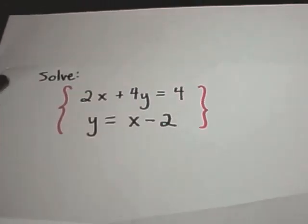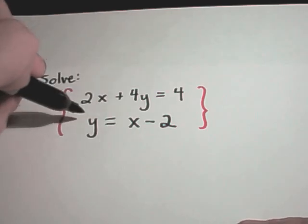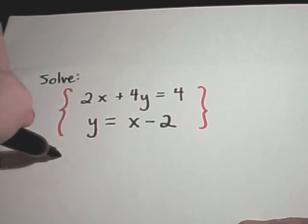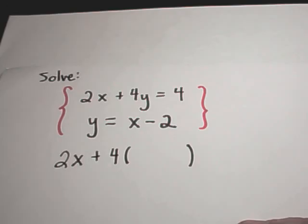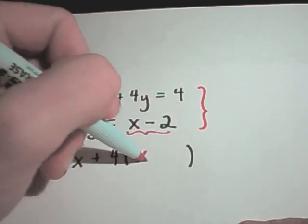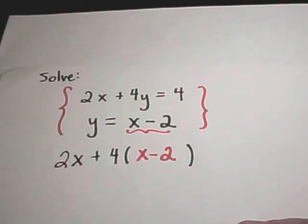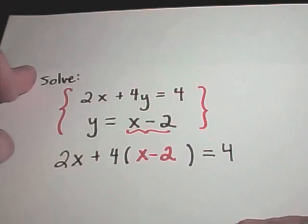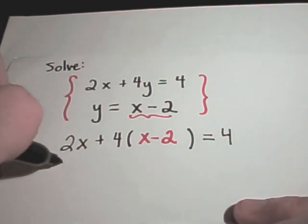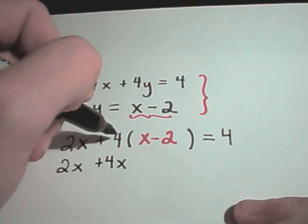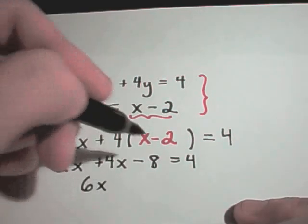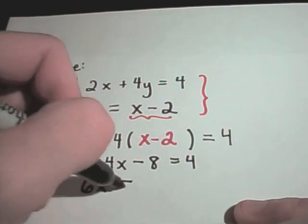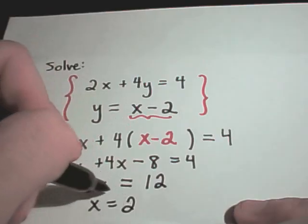Suppose we have this system of equations: 2x plus 4y equals 4, and y equals x minus 2. Since I have y isolated already, I'm going to rewrite this as 2x plus 4 times y, but now I'm going to plug in the fact that y equals x minus 2, and then that equals 4. I'll get 2x plus 4x, and when I distribute I'll get 4 times negative 2, which is negative 8, equals 4. 2x and 4x is 6x. If I add 8 to both sides, I'll get 12, and then x equals 2.